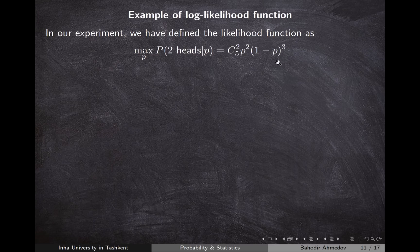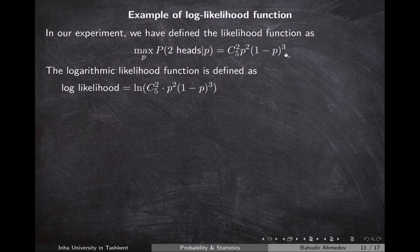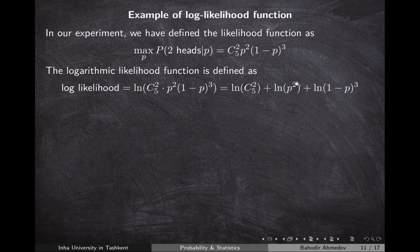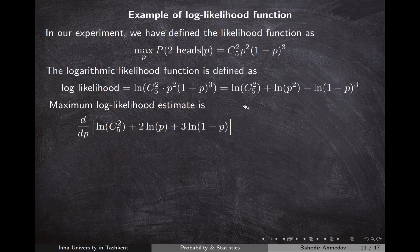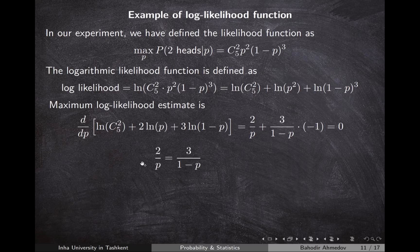Instead of maximizing the likelihood function C(5,2)·p²·(1−p)³ directly, we maximize its logarithm. Taking ln converts the products to sums: the ln(p²) becomes 2·ln(p) and ln((1−p)³) becomes 3·ln(1−p). Taking the derivative and setting it to zero, the derivative of the second term is 2/p and the third term gives −3/(1−p). Solving gives p = 2/5 — the same result, but obtained more easily using the log-likelihood.